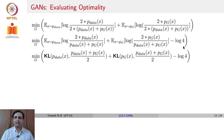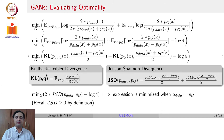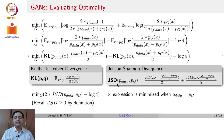Let us briefly review standard notations. KL divergence can be written as expectation over x from p of log p minus log q. The Jensen-Shannon divergence is another measure of distance between two probability distributions. Given p_data and p_g, the Jensen-Shannon divergence is: KL(p_data || (p_data + p_g)/2) / 2 plus KL(p_g || (p_data + p_g)/2) / 2. So we can now replace those KL divergences.